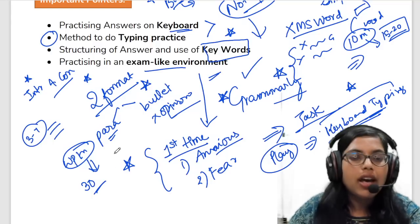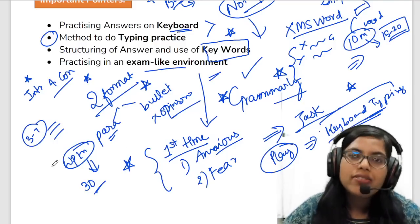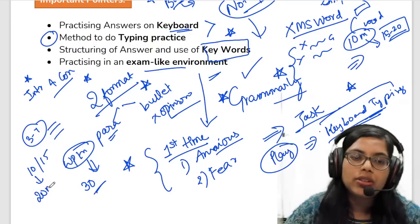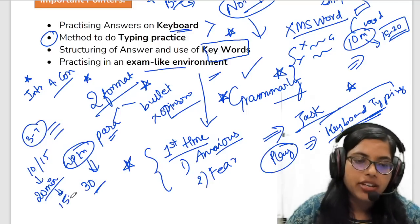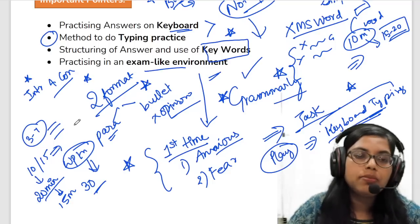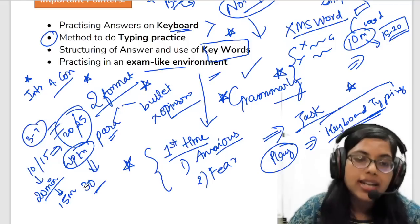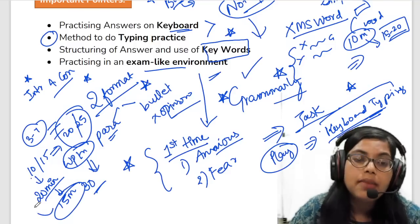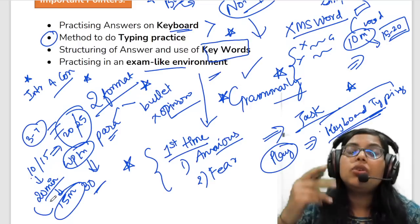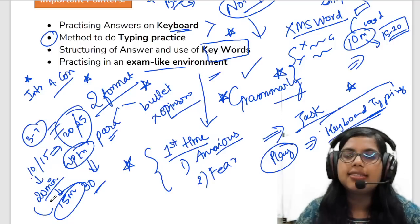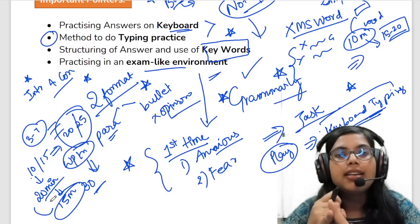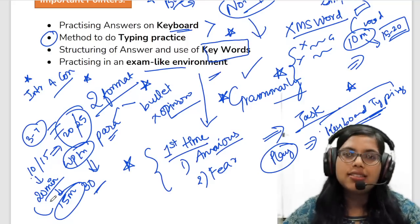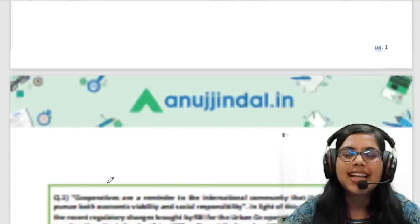I always tell students that for a 10-marker question, the maximum time allotted is 20 minutes — always try to answer it in 15 minutes. For a 15-marker question, the maximum time is 25 minutes and you should write the answer in 20 minutes. The remaining 5 minutes should be used to review your answer. Until you review, you will not understand what mistakes you have committed — grammatical mistakes, punctuation errors, or ideas not flowing logically. Keep all these things in mind.